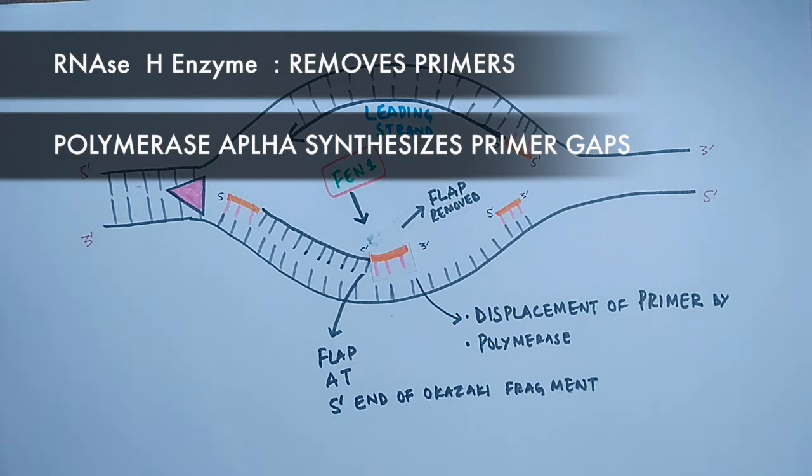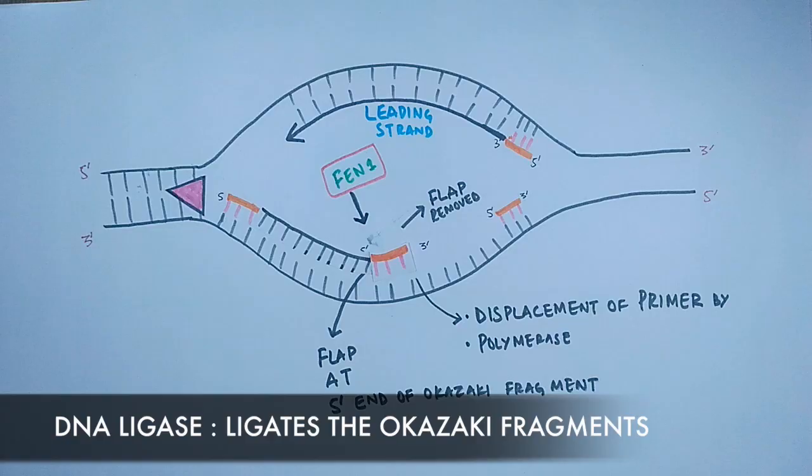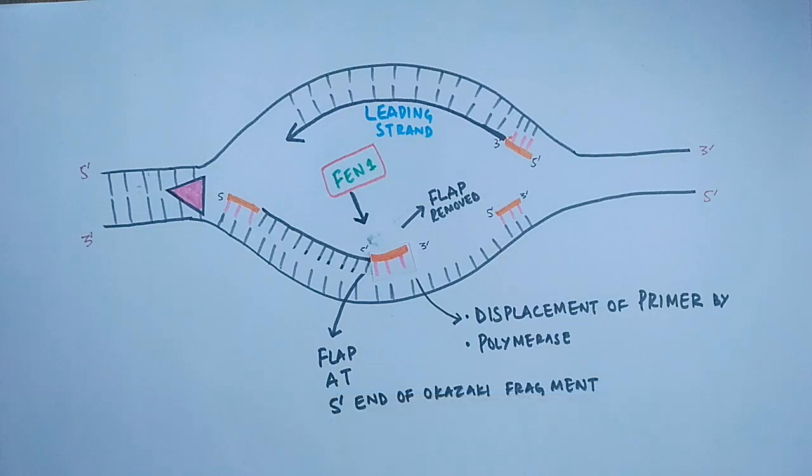Then we have a DNA ligase enzyme which ligates the Okazaki fragments once the primers have been removed. This concludes our DNA elongation part of eukaryotic DNA replication. In the next video we will be discussing about the termination process.